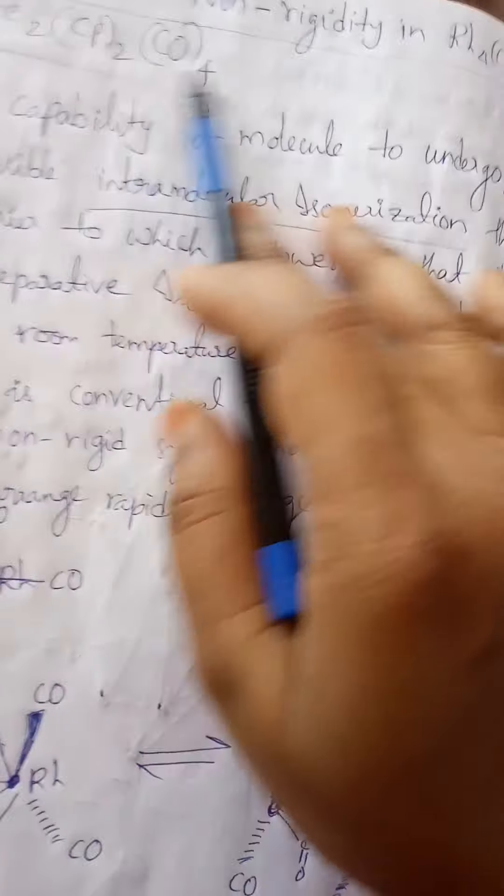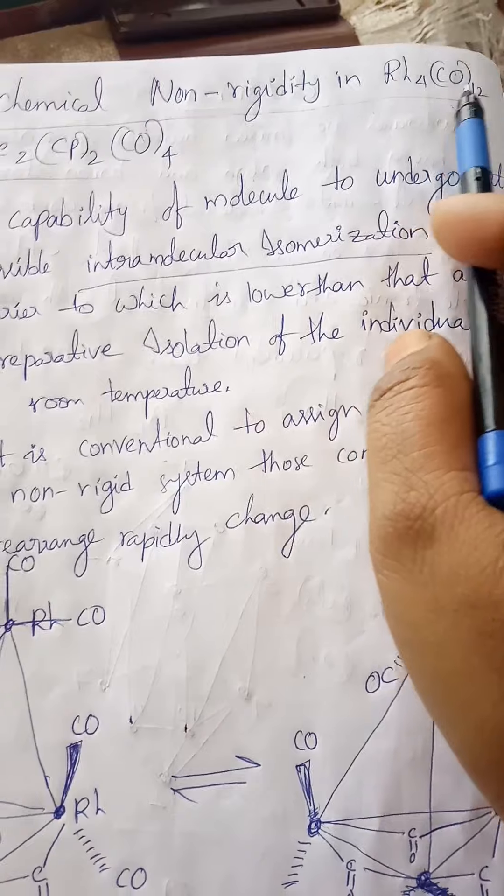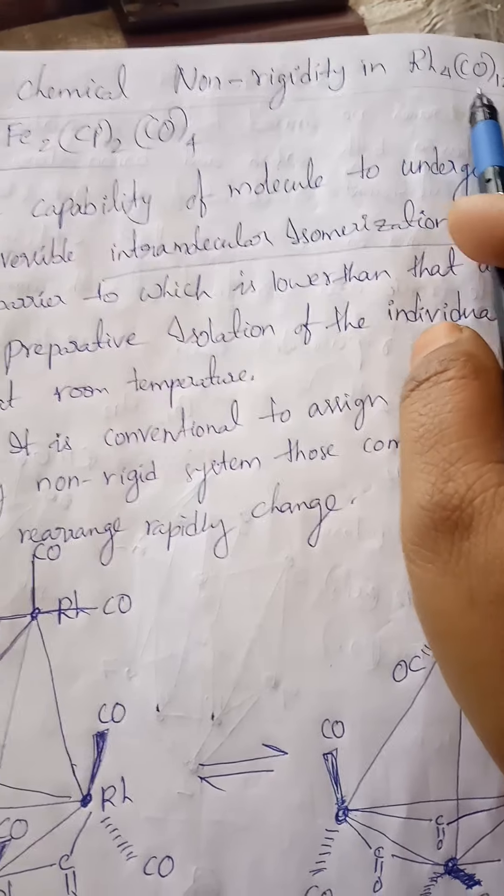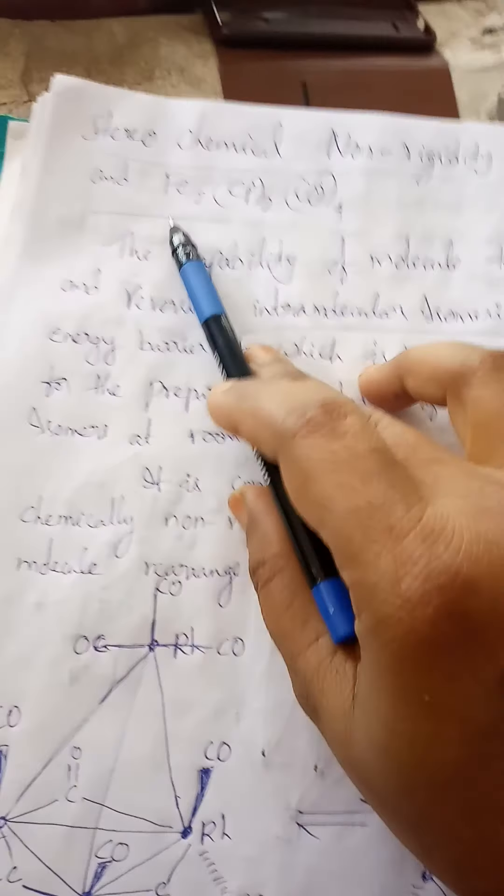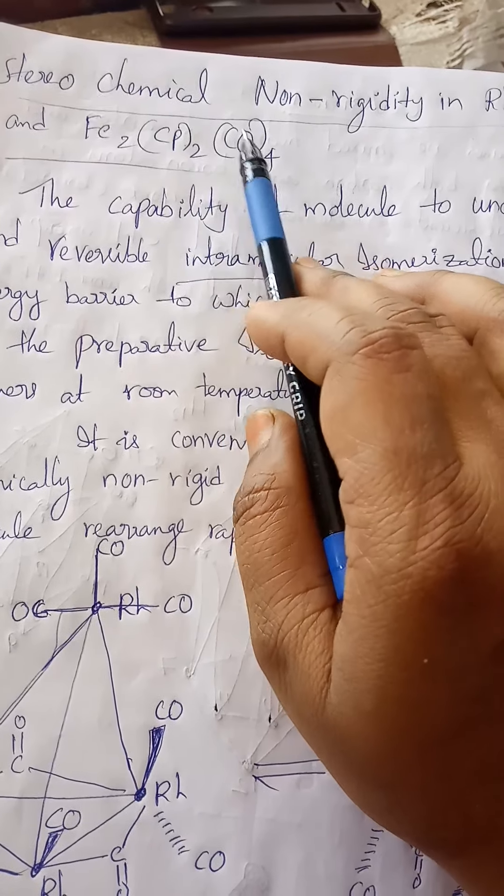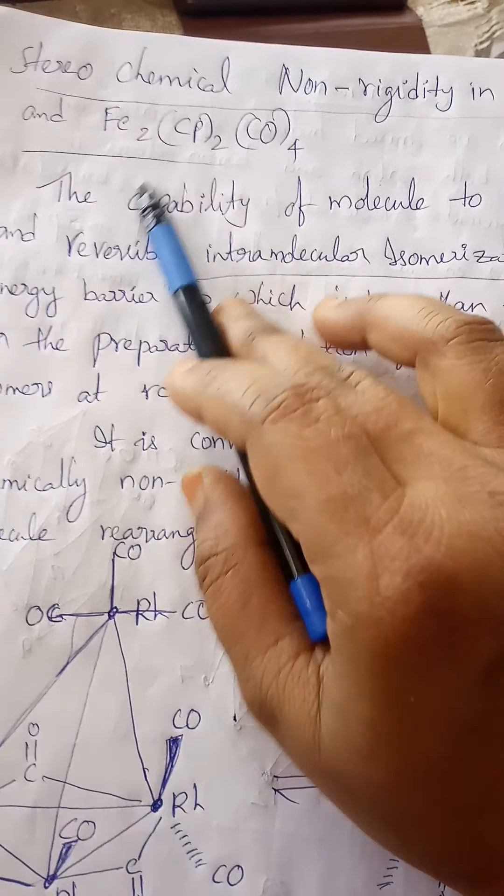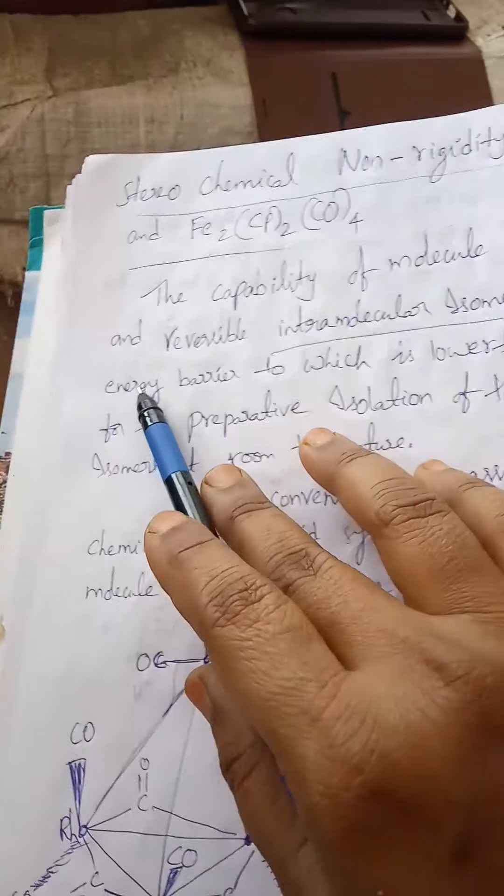The next topic is stereochemical non-rigidity in Re4Cl, RH4, CO taken 12 times, cyclopentadiene, and dicyclopentadienyl iron tetracarbonyl dirhenium iron complex.